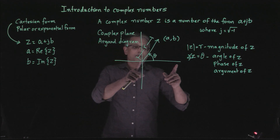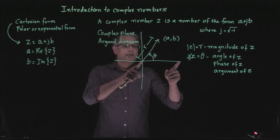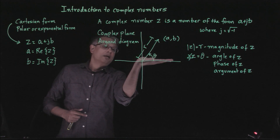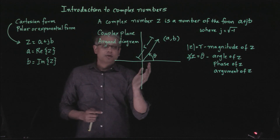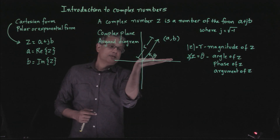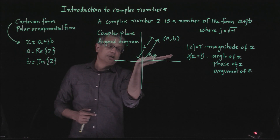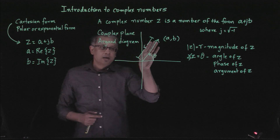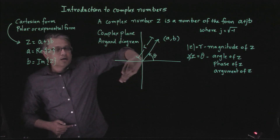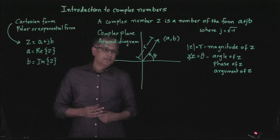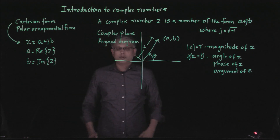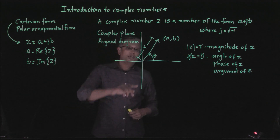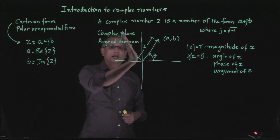We measure positive angles counterclockwise from the x-axis. If we measure the angle in the clockwise direction, those are considered negative angles. We'll talk more about this convention when we work out examples.